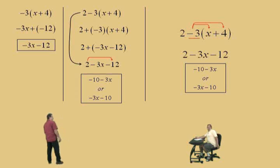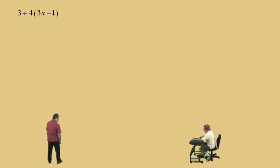Anyway, here we go, Charlie. 3 plus 4 times 3x plus 1, Charlie. Now, we're going to distribute that plus 4 through the parentheses. 4 times 3x is 12x. And, 4 times 1? 4. Here we go.